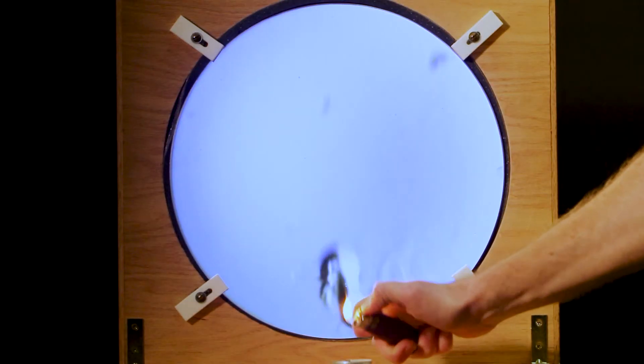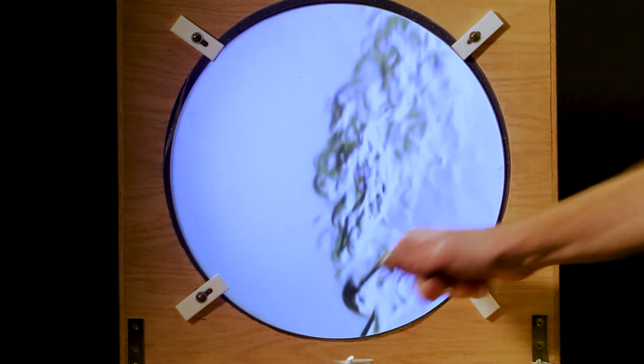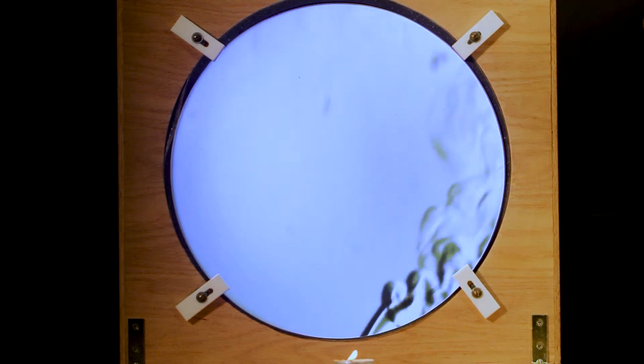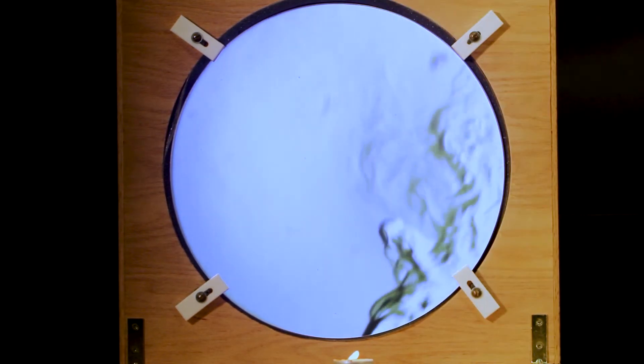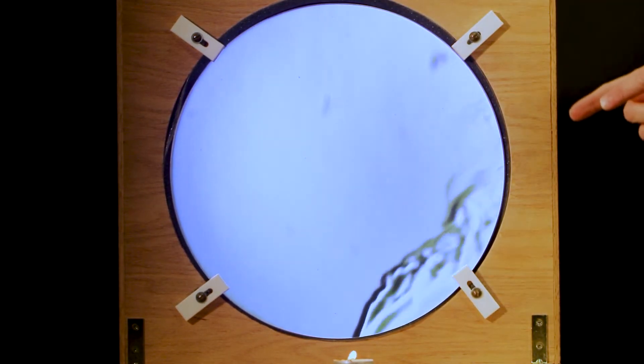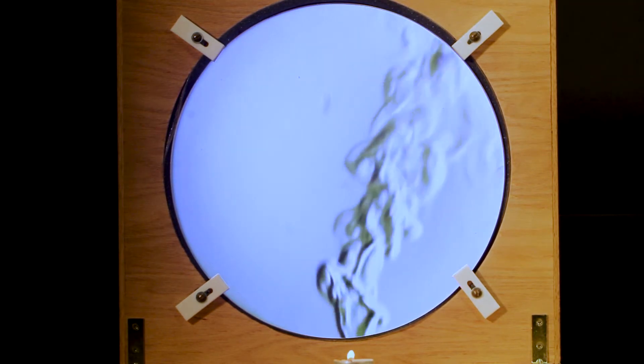For example, if I take this lighter and light this tea candle right in front of the mirror, we should see a glorious bloom of hot air rising up. You might even see it's narrow at the bottom, and then it becomes turbulent as it flows up and becomes non-laminar.